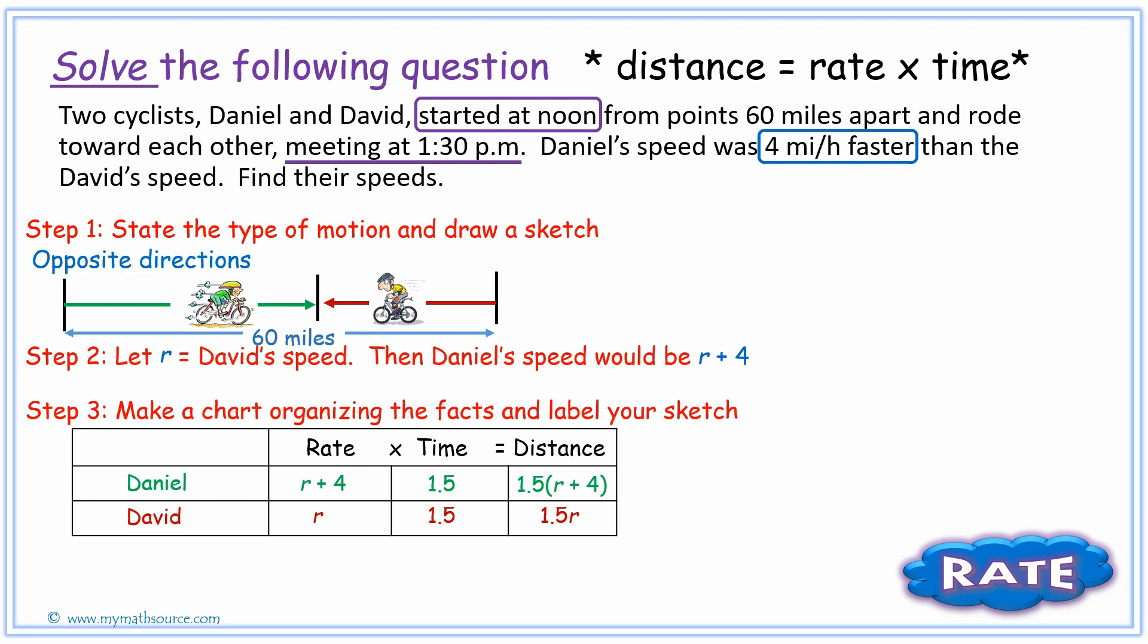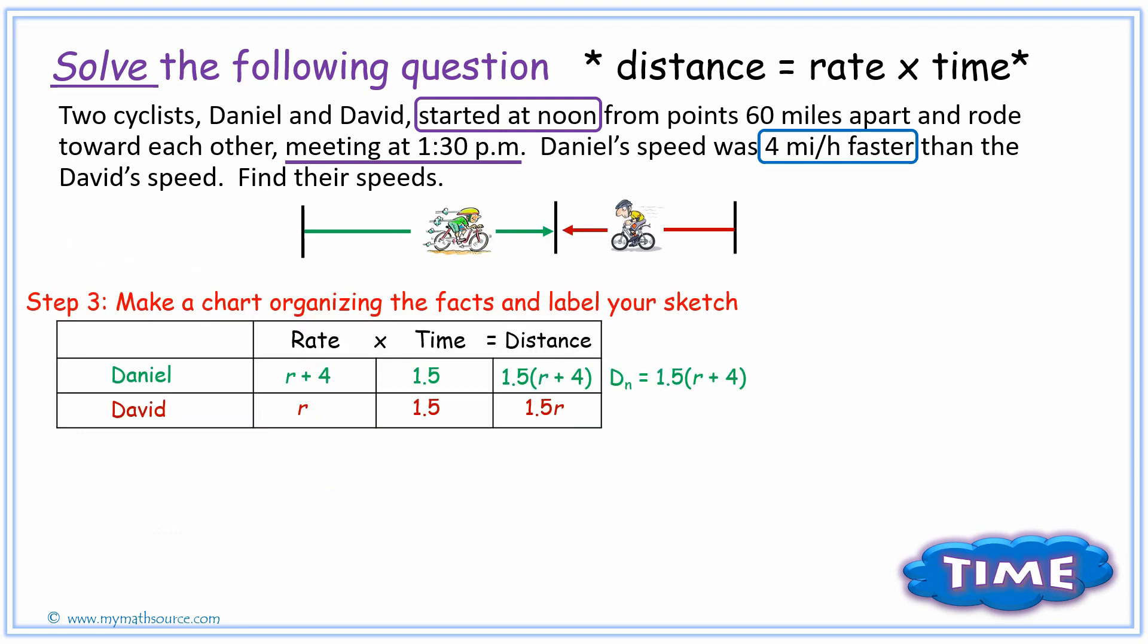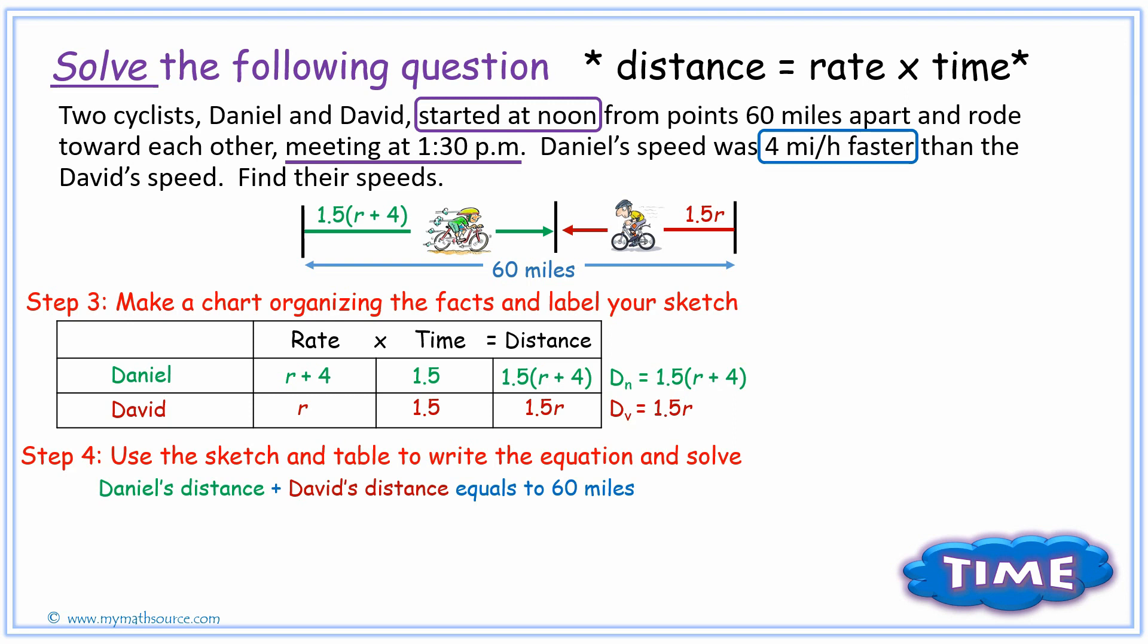Well, with that, it makes it very easy to come up with an equation by just simply looking at our sketch. Remember, the two of them will cover a distance of 60 miles. That means that Daniel is going to cover a portion of that distance, and we can use the subscript to differentiate between David's. So dn representing Daniel's distance and dv representing David's distance. The distance that Daniel traveled, since he's going a bit faster, would be a little bit more than David's, but the two of them together should equal up to the 60 miles that was covered between the two of them. That means that I'm simply going to add, and that's what step four means: we're going to use the sketch and table to write the equation and solve. So Daniel's distance plus David's distance will equal to 60 miles, and as an equation that's simply 1.5 times the quantity r plus 4 plus 1.5r is going to equal to 60.